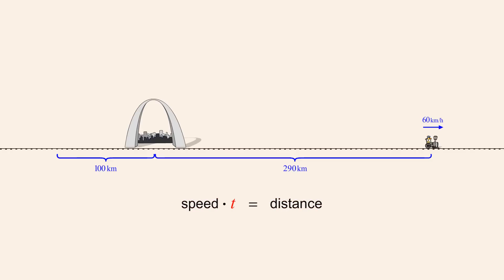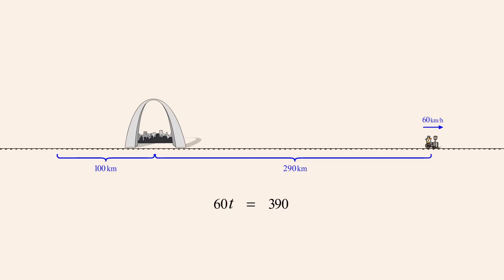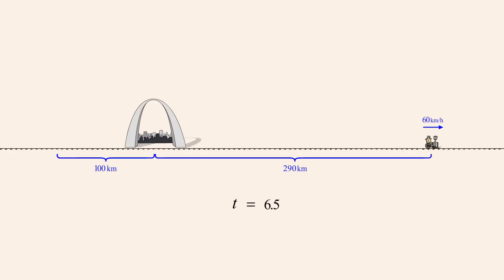Let's let the variable t represent the total time of the trip. We know that the train travels a distance of 100 kilometers plus 290 kilometers, or a total of 390 kilometers, and that the speed of the train is 60 kilometers per hour. Since we are solving this equation for t, we divide both sides by the coefficient of t, which is 60. We can then cancel the factors of 60, leaving the equation t equals 390 divided by 60, or 6.5. So the total time required for the train trip is 6.5 hours.